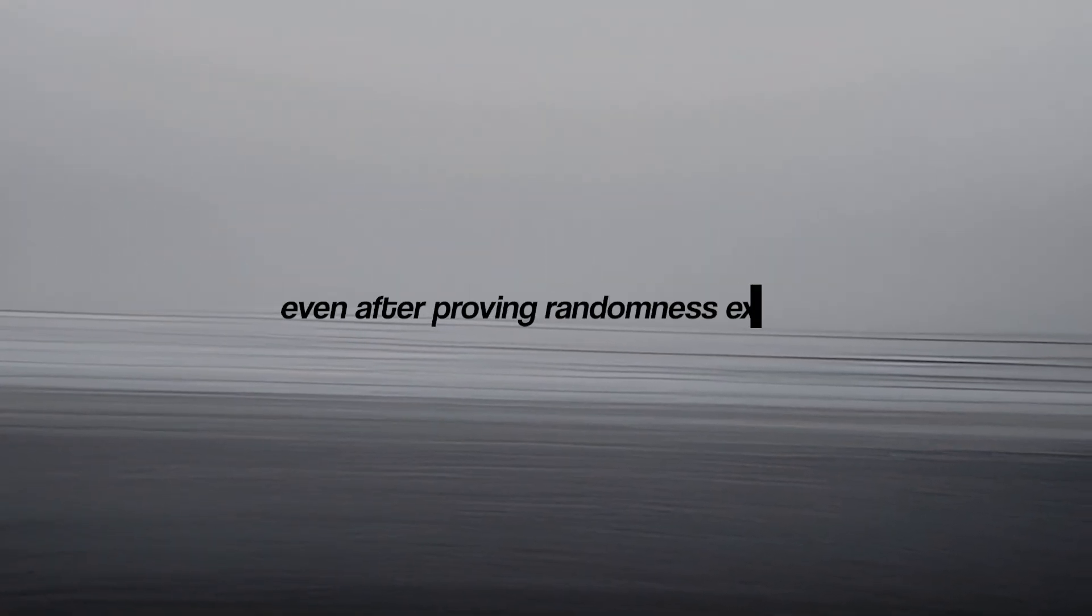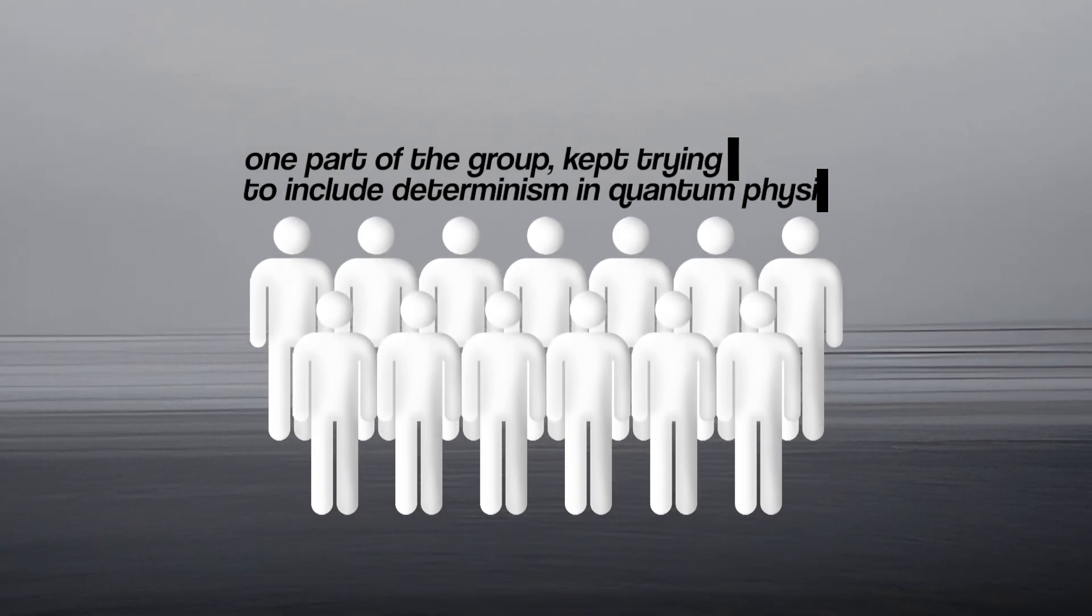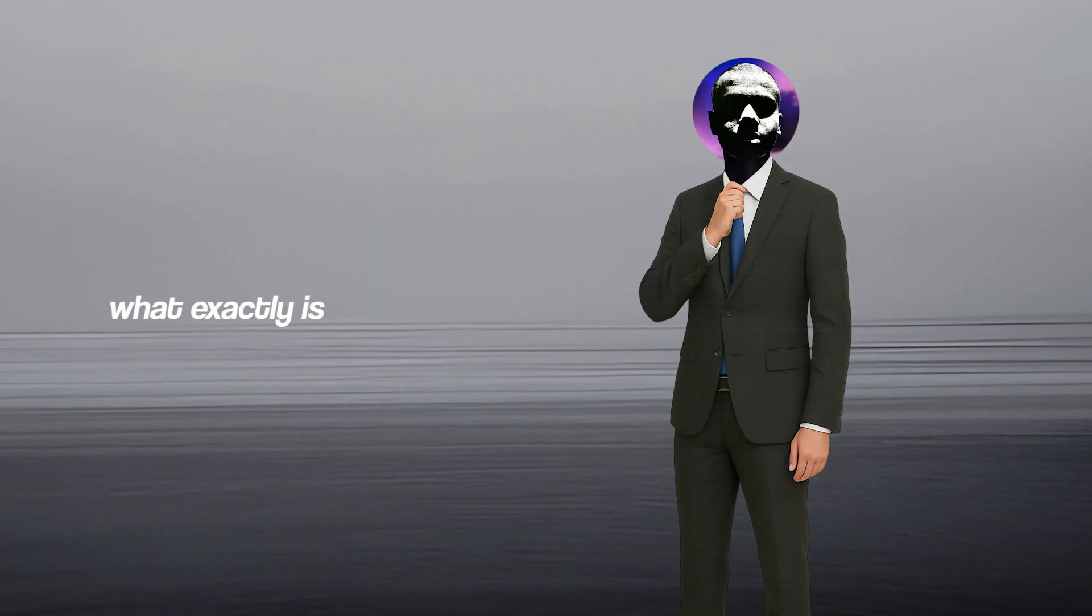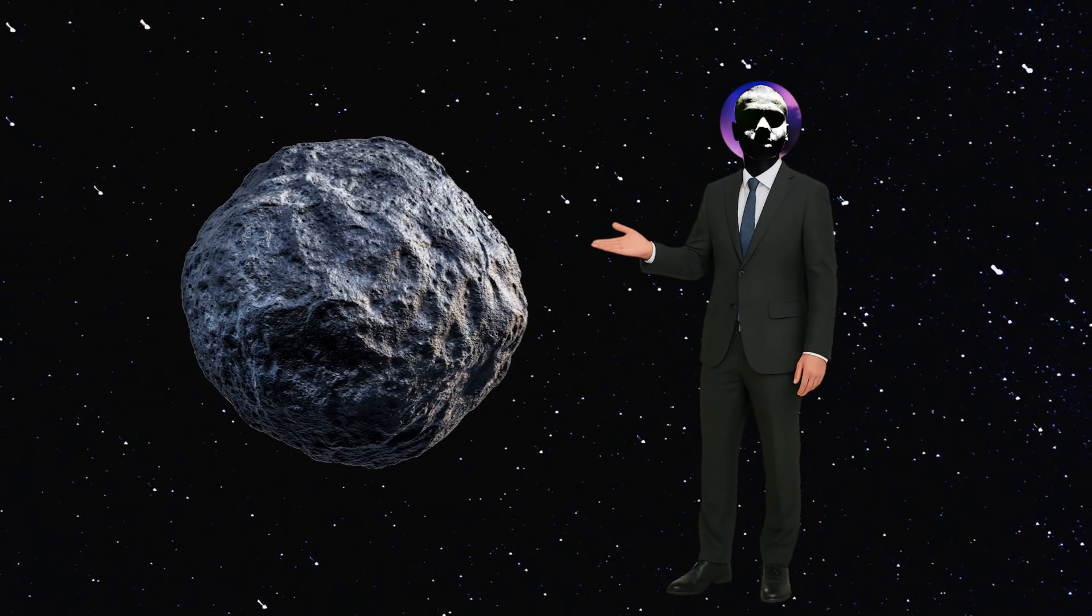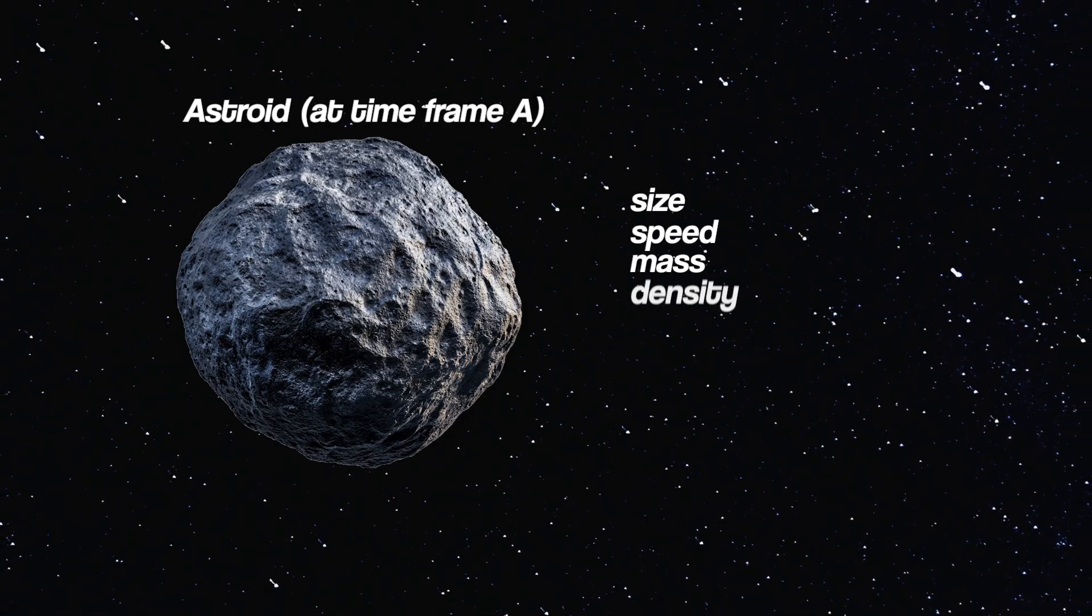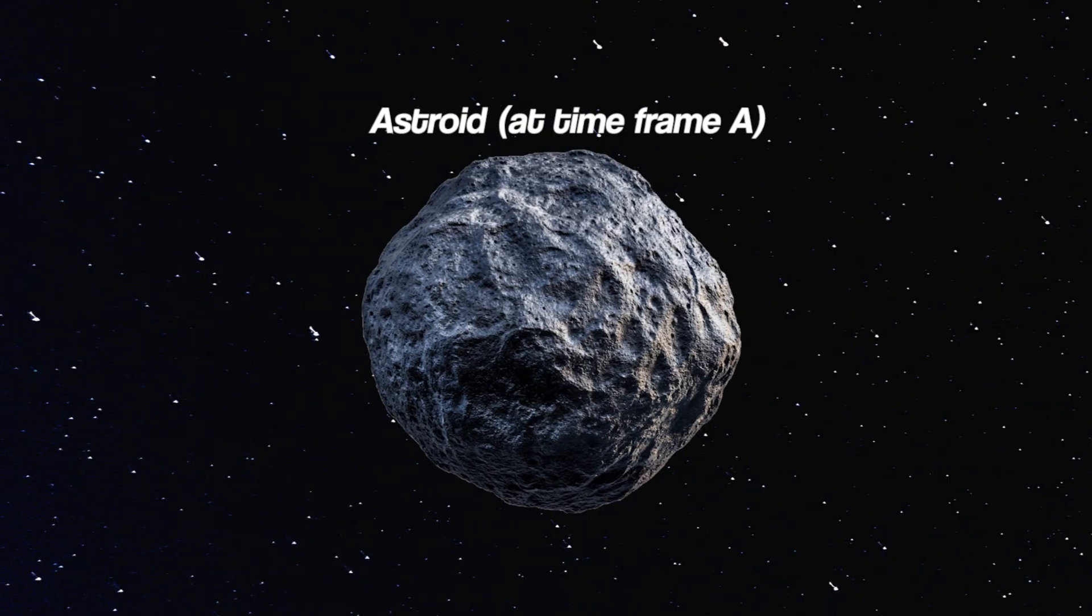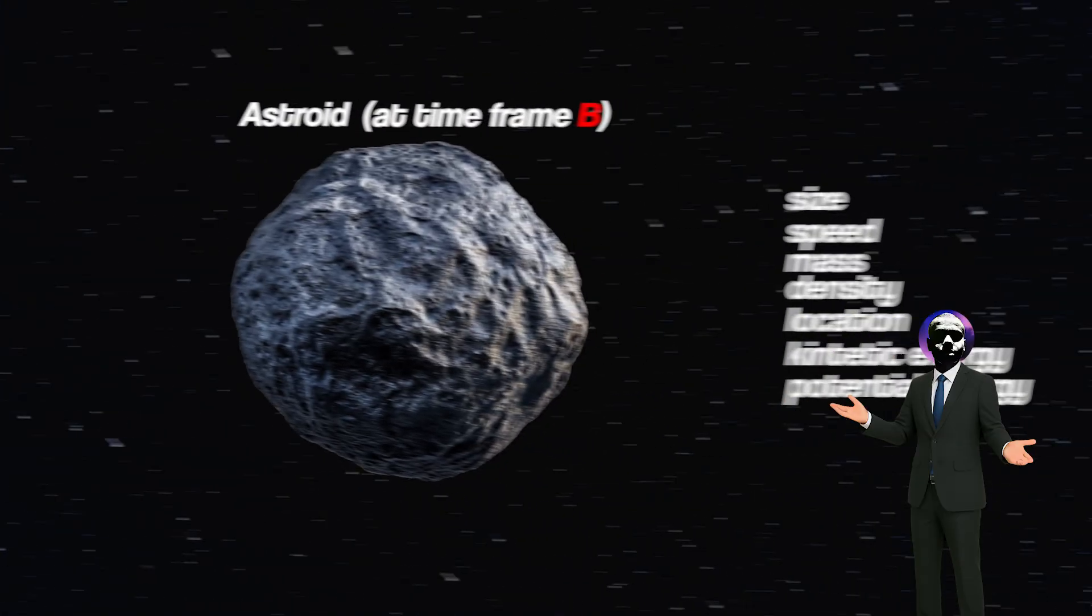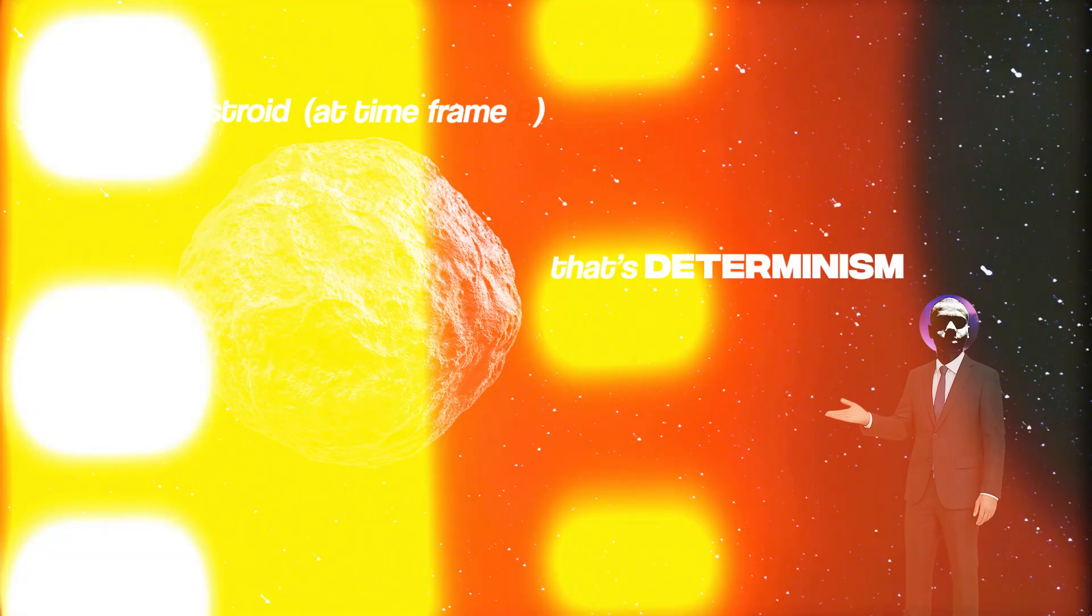Now, the community was divided. Even after seemingly proving that randomness exists, one part of the group kept trying to include determinism in quantum physics. But what exactly is determinism? Imagine I give you every possible piece of information about an asteroid at a given moment. Its size, speed, mass, density, location, energies, everything. Then I ask you to tell me what these values will be a few minutes later. Given that you know the classical laws of physics, you'll be able to determine them precisely. That's determinism.